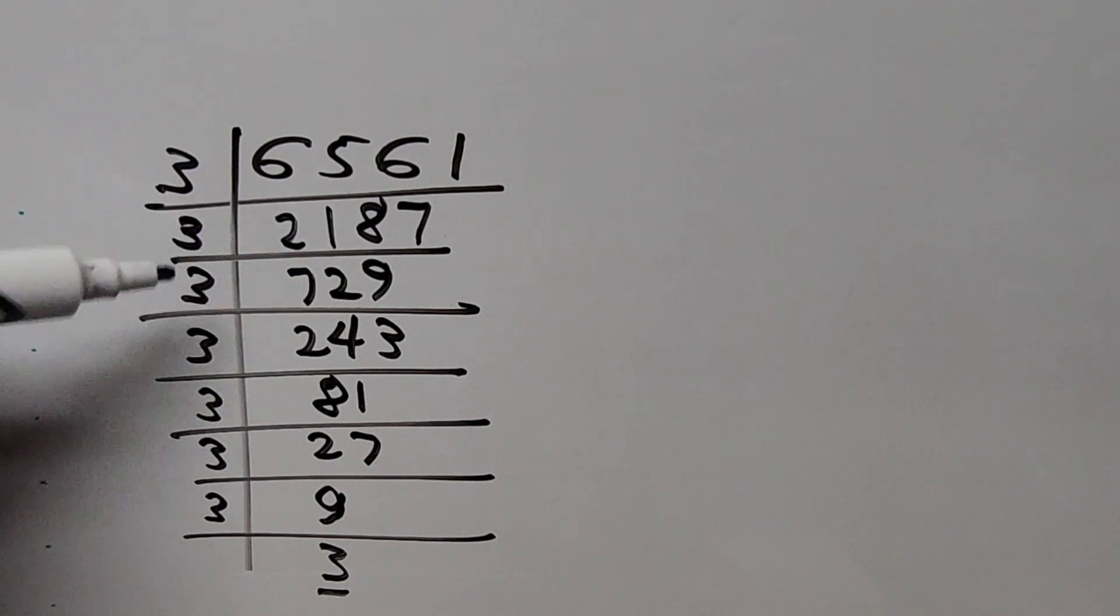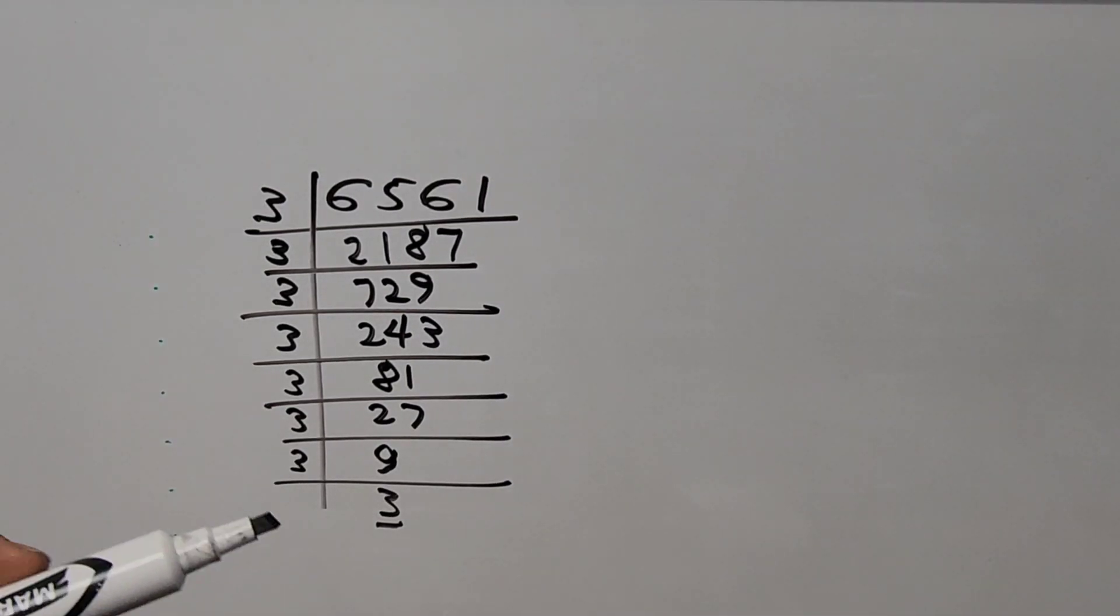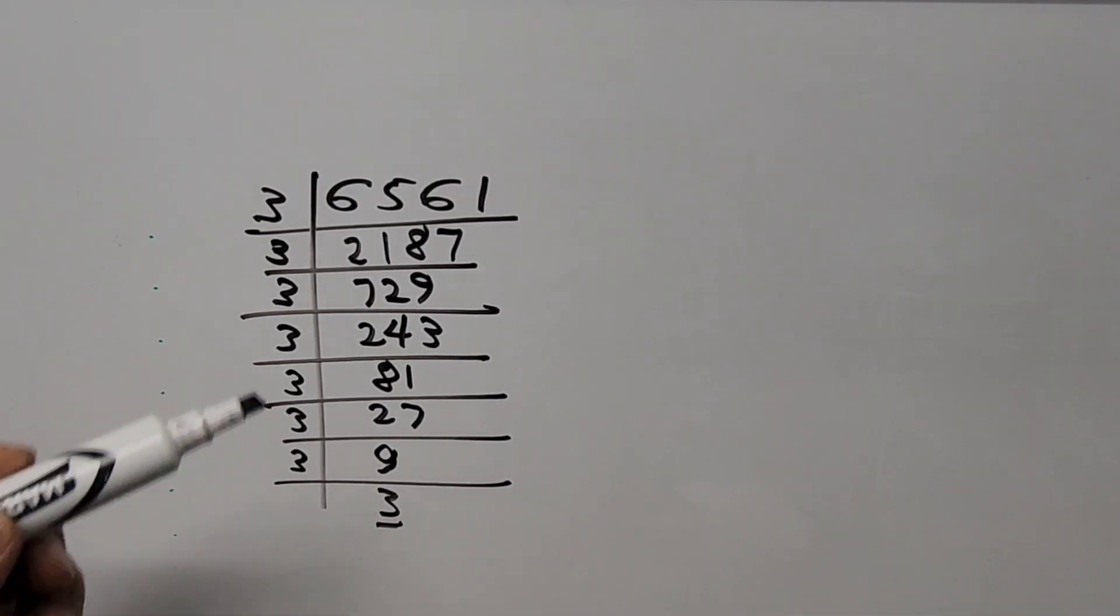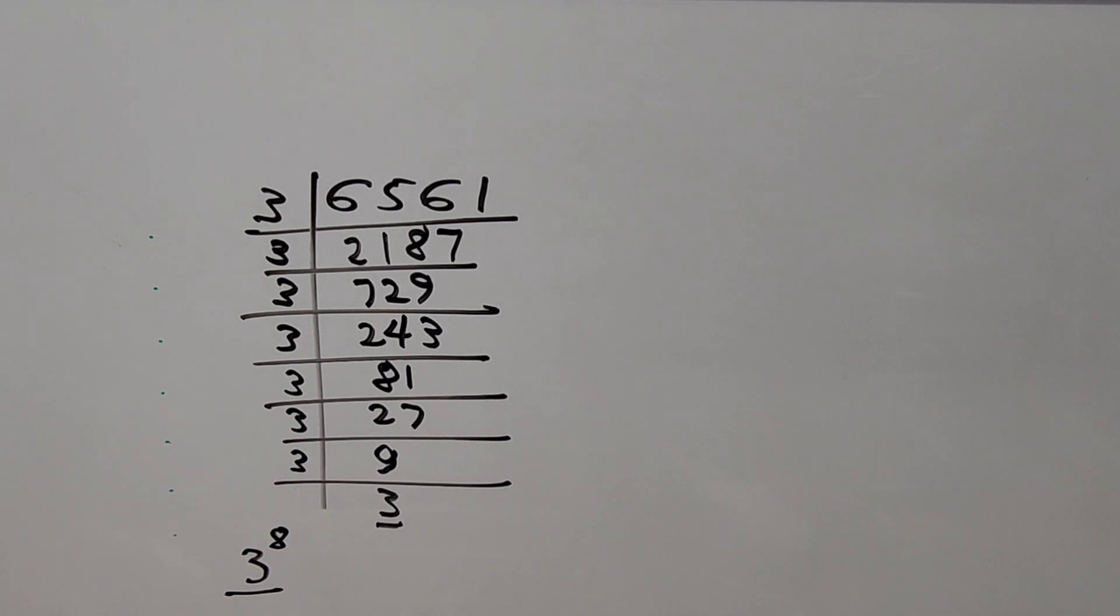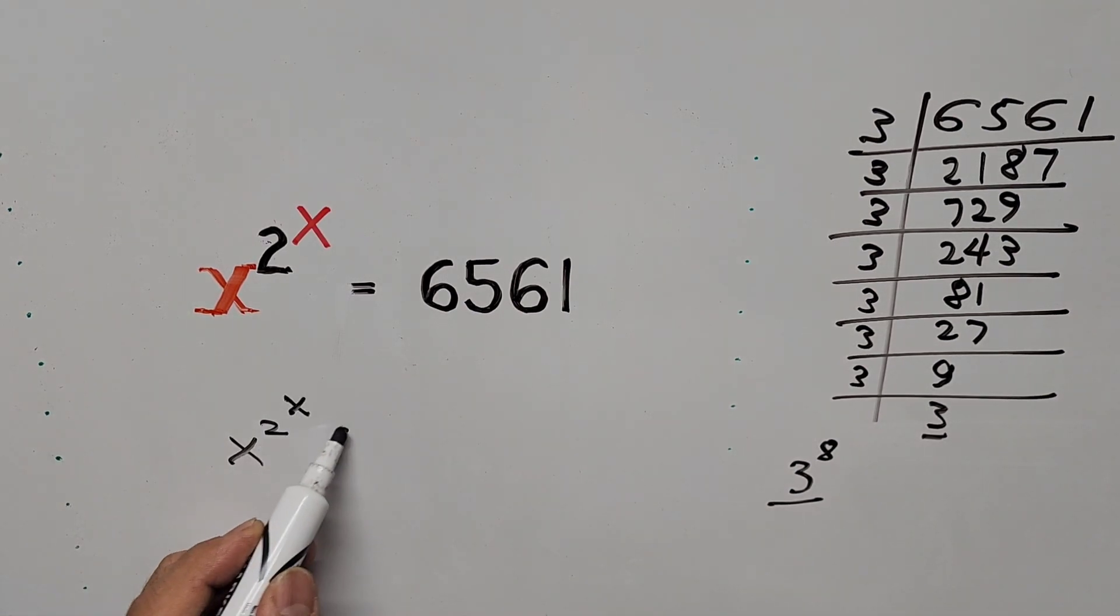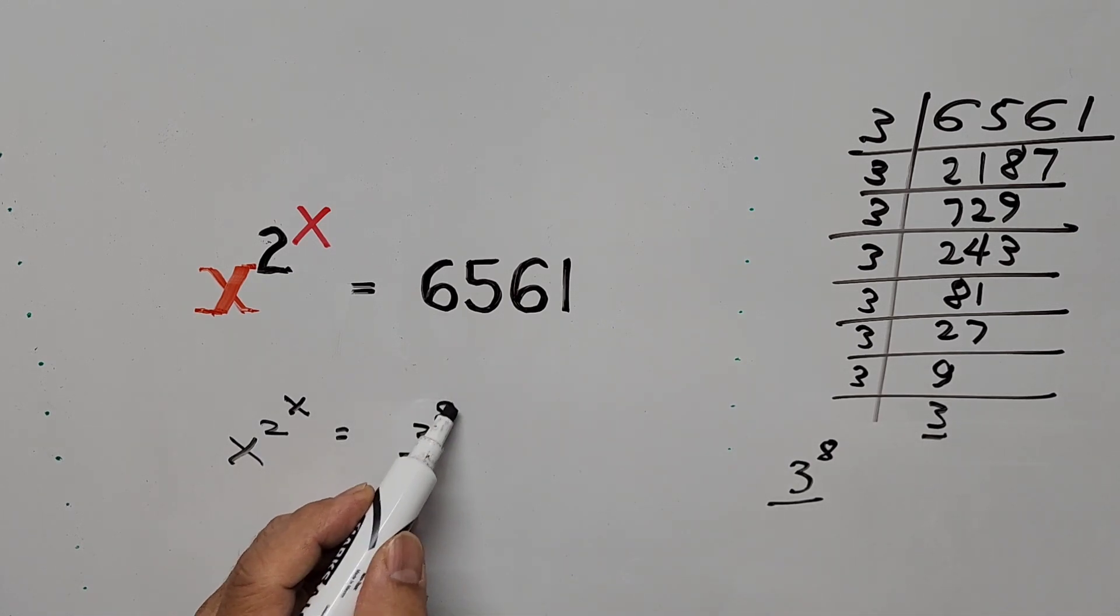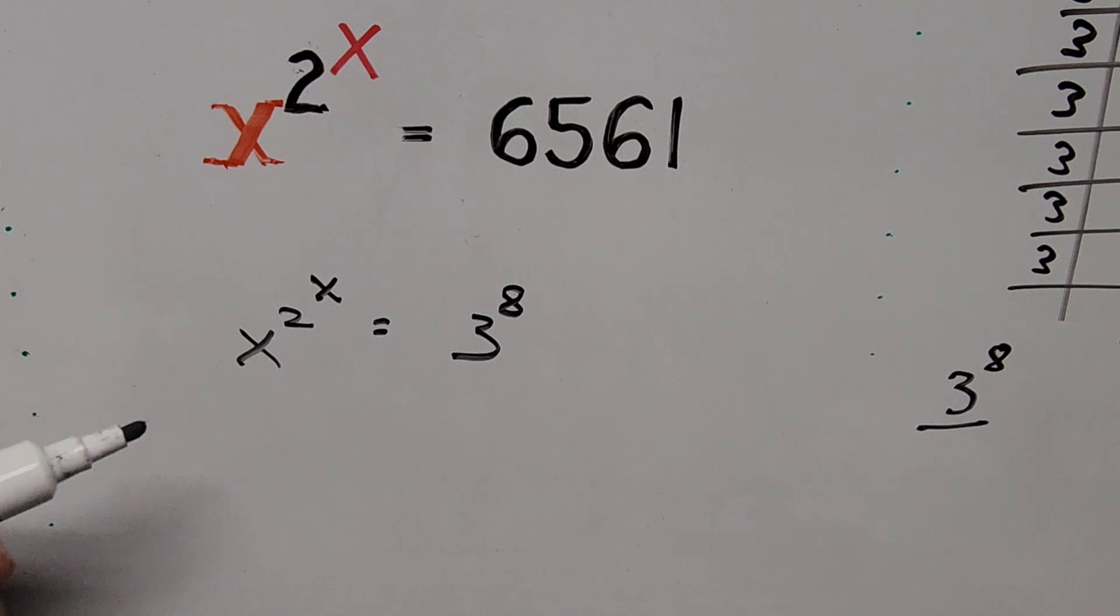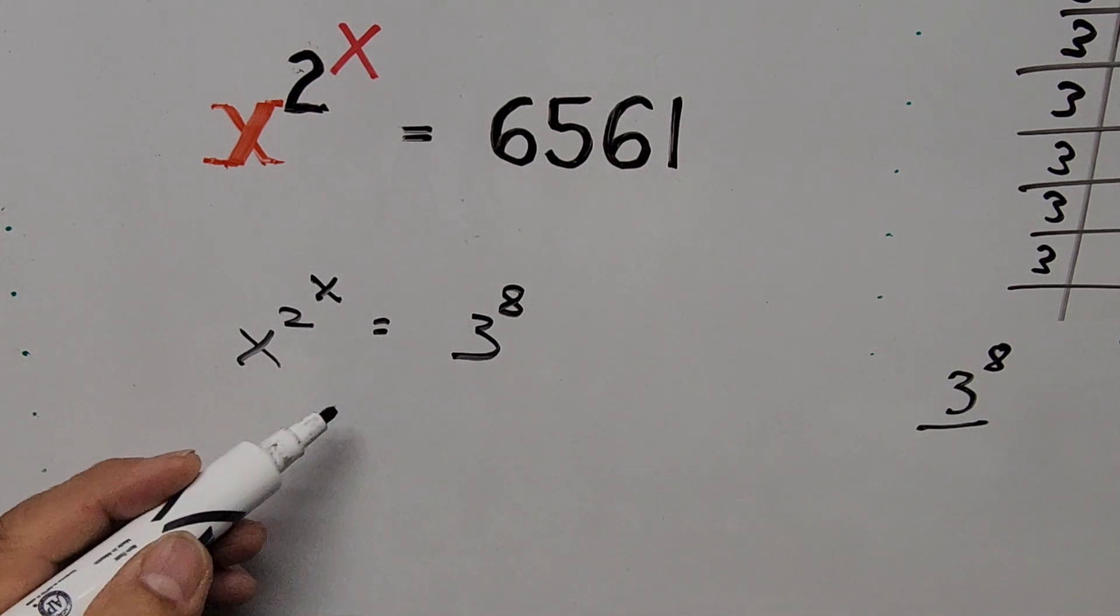Now let's start counting the factors: 1, 2, 3, 4, 5, 6, 7, 8. So here the equivalent exponential form of 6561 is 3 to the power of 8. That's in exponential form. Now let's go back to our equation. From here we'll be taking the natural logarithm on both sides of the equation.